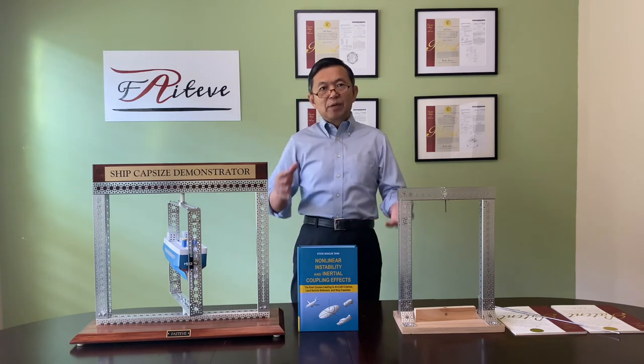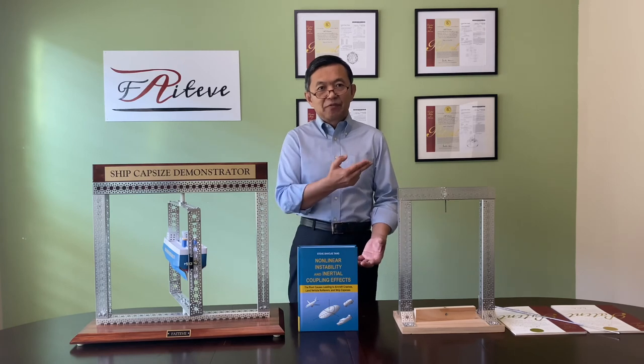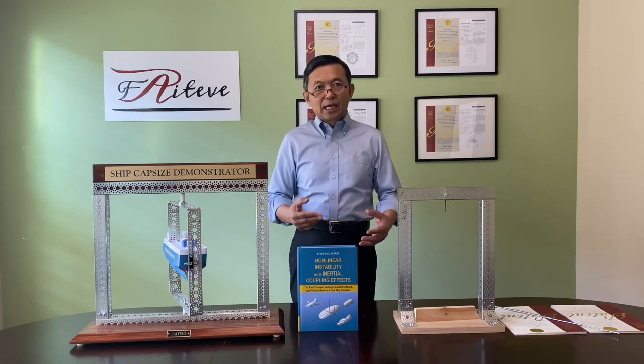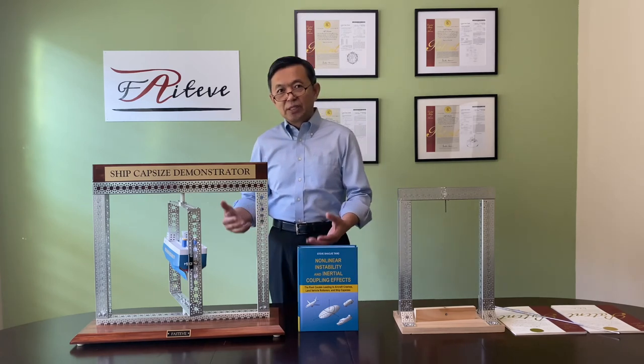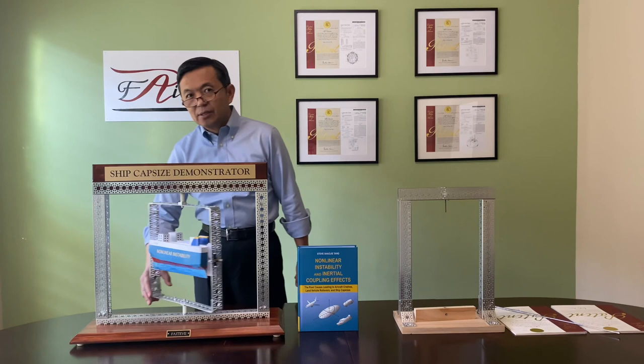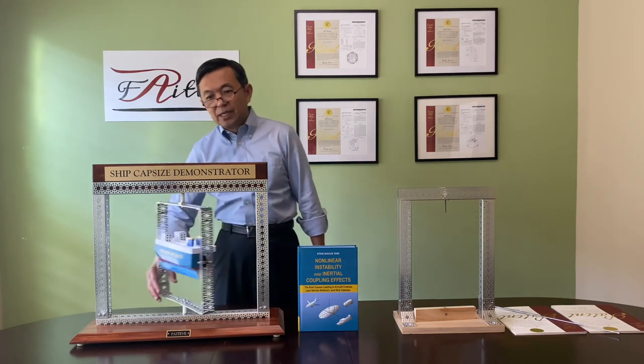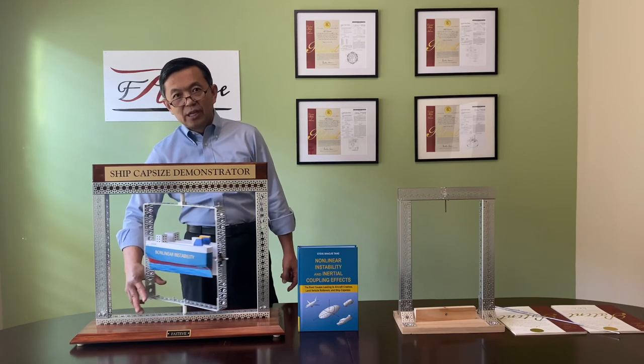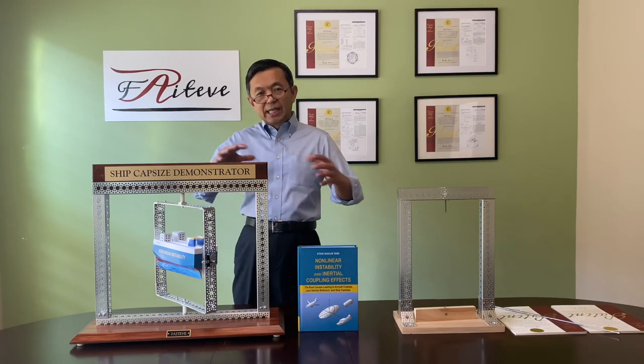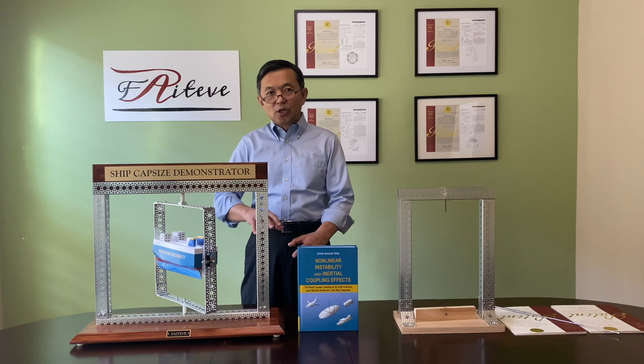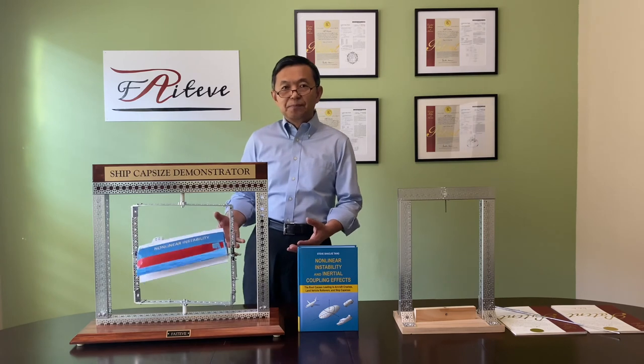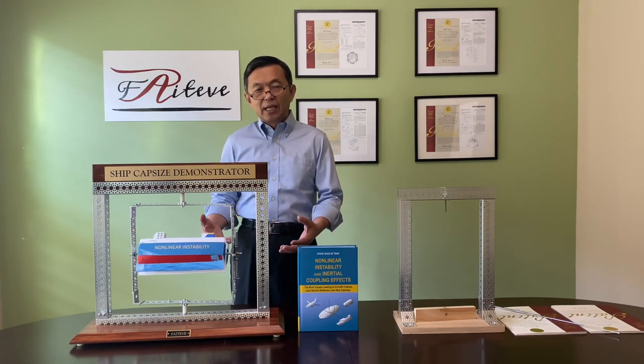That means there is a limit. Within that limit, the elephant disappears. But beyond that limit, the elephant comes out to play. Let me show you this phenomenon. I can rotate this ship like this. Nothing unusual happens. I can rotate the ship like this. Nothing unusual happens. Because what I did to the ship was within that limit. But if I go beyond that limit, this is what happens. The ship capsizes immediately and easily.